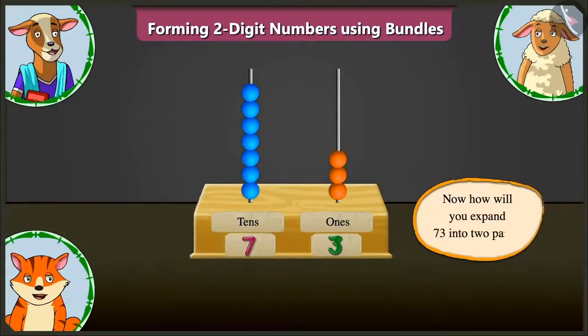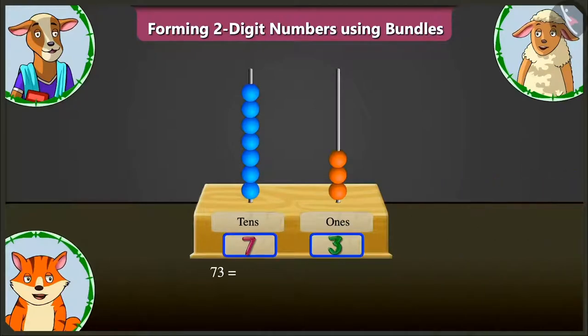Now, how will you expand seventy-three into two parts? Seventy-three means seven tens and three ones. Meaning, each two parts will be seventy and three. Well done.